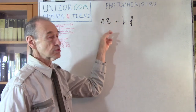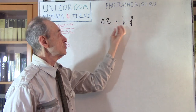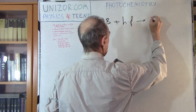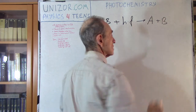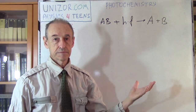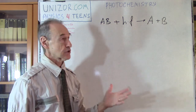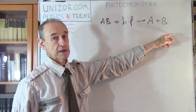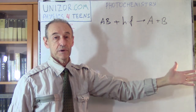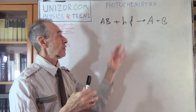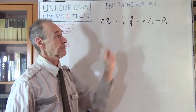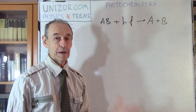So what happens if something containing two different elements consumes a certain amount of energy? One reaction that can happen is that the two elements are separated. This is one type of photochemical reaction: A·B + hf → A + B. This represents one molecule containing two elements being split into two separate elements, or a bigger molecule separated into two smaller molecules — like the degradation of plastic under the sun.